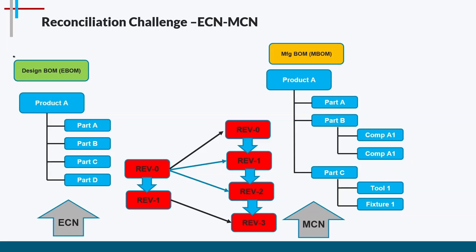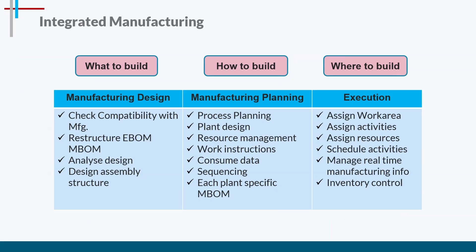To avoid all these challenges, manufacturers are moving to a single integrated manufacturing platform where they can define what to build, how to build, and where to build. In manufacturing design, we check manufacturability compatibility, restructure eBOM and mBOM, and analyze the design assembly structure. In manufacturing planning, we handle process planning, plant design, resource management, work instructions, and data from mBOM — including sequencing each plant-specific mBOM and managing assembly and manufacturing build-of-process BOPs.